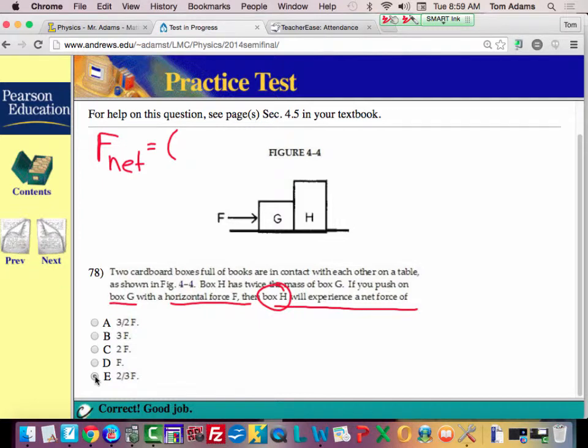I'm going to say that G is M. So we'll say M, and then this would be 2M, plus 2M, times an acceleration. So my net force is equal to 3M times A.